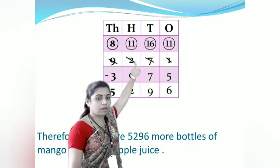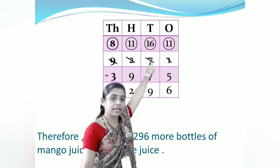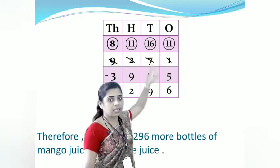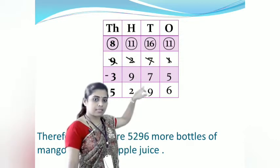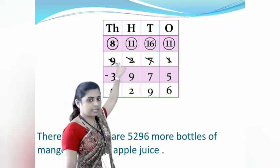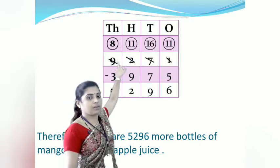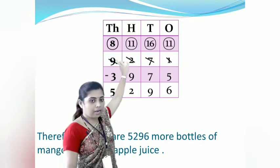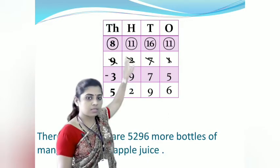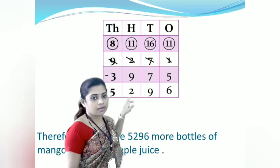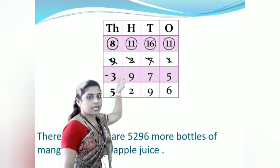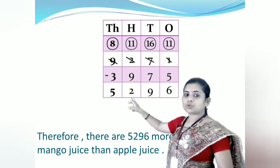The 2 in the hundreds place reduces by 1 to become 1, and 1 borrow means 10 tens added to 6 gives 16. 16 minus 7 is 9. Now 1 is remaining in the hundreds place. We cannot subtract 9 from 1, so take a borrow from the thousands place. The 9 reduces by 1 to become 8, and 1 thousand means 10 hundreds added to 1 gives 11. 11 minus 9 is 2. Finally, subtract thousands: 8 minus 3 is 5. The difference is 5296.